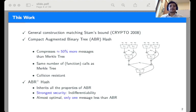Here is the one slide representation of our work. We introduce two hashing modes, ABR and ABR+. Both modes are based on 2n to n-bit compression functions. The parameters of ABR mode match Stam's bound from Crypto 2008. When compared to popular Merkle tree, ABR mode compresses around 50% more messages by making the same number of calls to the underlying compression function.